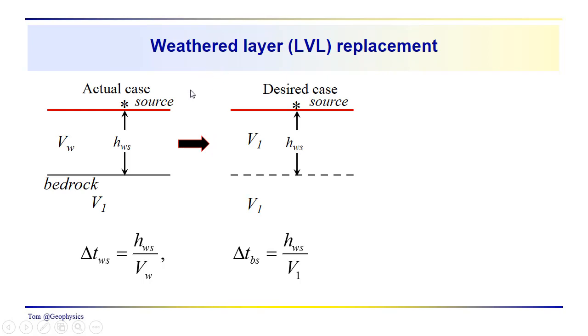Let's take a look at the weathered layer replacement. As I mentioned, this turns out to be very simple. We've got the thickness of this layer. We've got our velocity here from our refraction survey, and we also have this velocity V1 from the refraction survey. Those are the velocities we're using. We know that in the real world, the actual travel time, assuming we have the thickness correct and the velocity correct from our survey, is just this thickness of the weathered interval divided by the velocity of the weathering zone. That's our delta T actual.